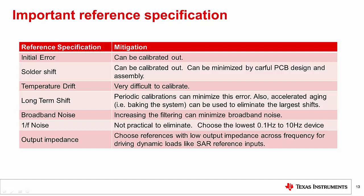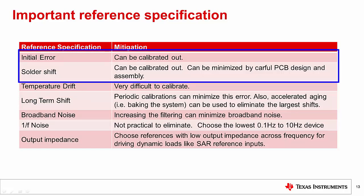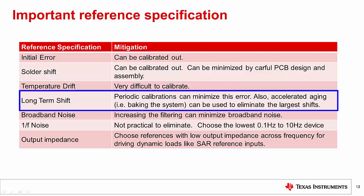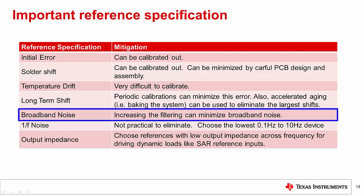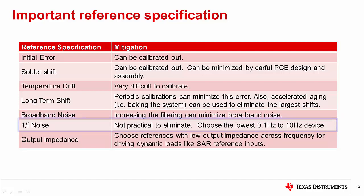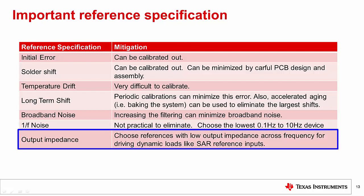This table summarizes the different reference error sources discussed. The key point to remember for each error source is how the error can be mitigated. Initial error and solder shift can be calibrated out. Temperature drift is difficult to calibrate out, so it is minimized by selecting a device with specifications that meet your requirements. Long term shift, or aging, can be eliminated by periodic calibrations or by baking the product to accelerate aging. Broadband noise can be minimized using filtering, but 1/f noise can only be minimized by selecting a device with good specifications. Finally, low wideband output impedance is important for applications with dynamic loads like SAR reference inputs; the only way to mitigate a non-optimal output impedance is to use a reference buffer.